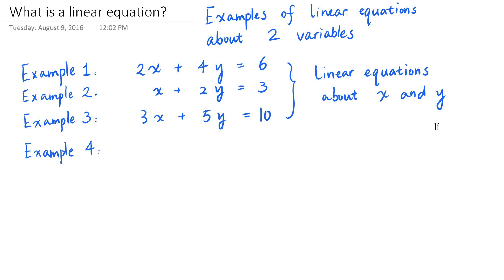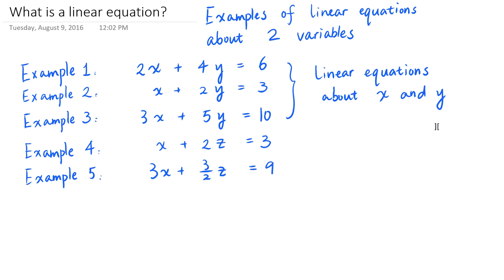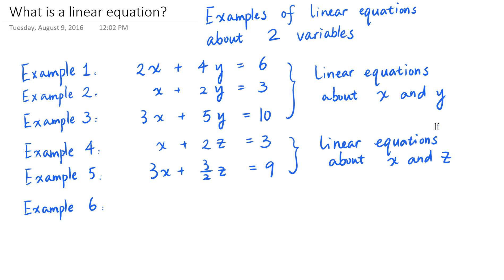And again, of course, we can name the variables differently. So x plus 2z is equal to 3, and 3 times x plus 3 halves times z is equal to 9 are both linear equations about x and z. Similarly, y plus 2 times z is equal to 3 is a linear equation.